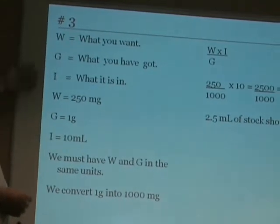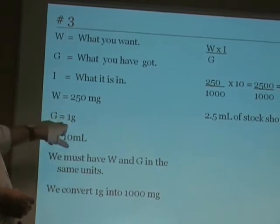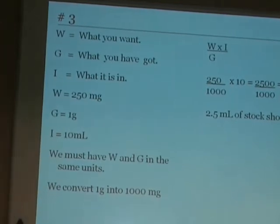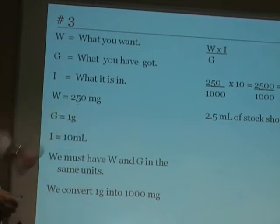So we write down the same three numbers: want, got, in. W is 250mg, got is 1g, and in is 10ml. W and G must both be in the same units, and here G is in grams and W is in milligrams.